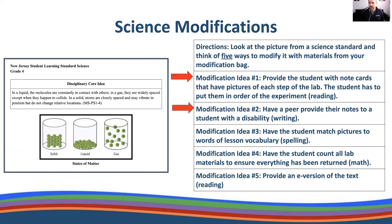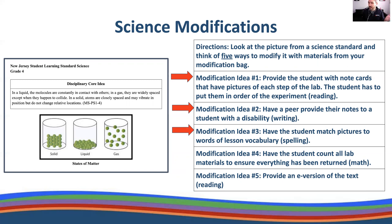Modification idea number two: have a student provide their notes to a student with a disability. This counts as writing — they're accessing writing, and they can maybe highlight some words on the copy of the student's notes so they're engaging, finding words, maybe writing their name at the top. It's a modified way of participating in writing. Modification idea number three: have a student match pictures to words of the lesson vocabulary — this is a spelling activity. You can have students fill in one letter of a word; there are many ways to make this a spelling activity within a science curriculum.